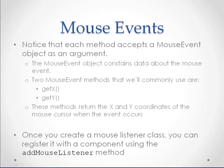Notice that each method accepts a mouse event object as an argument. The mouse event object contains the data about the mouse event. Two mouse event methods that we'll commonly use are Get X and Get Y. These methods return the X and Y coordinates of the mouse cursor when the event occurs. Once you create a Mouse Listener class, you can register it with a component using the Add Mouse Listener method.